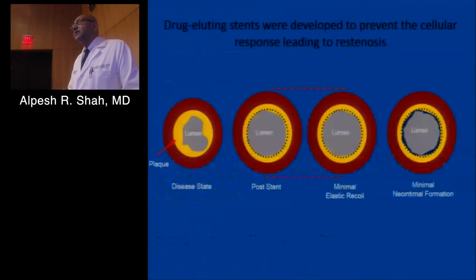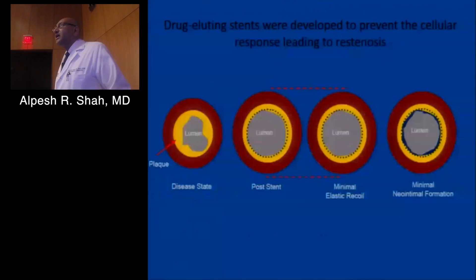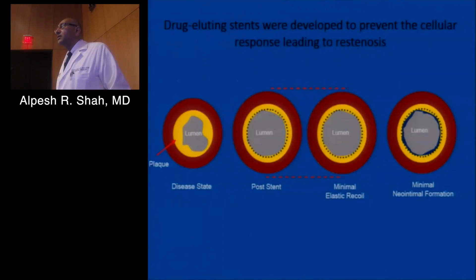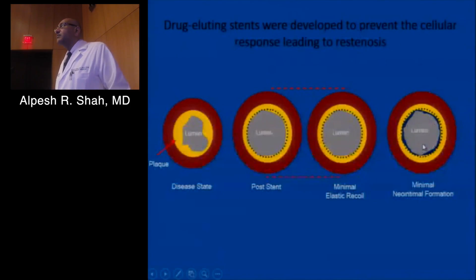A drug-eluting stent is essentially a metal stent coated with a drug. That drug is anti-proliferative and anti-restenotic. Once the lumen is established with the stent, over three to six months it prevents further restenosis response and keeps the artery wide open.